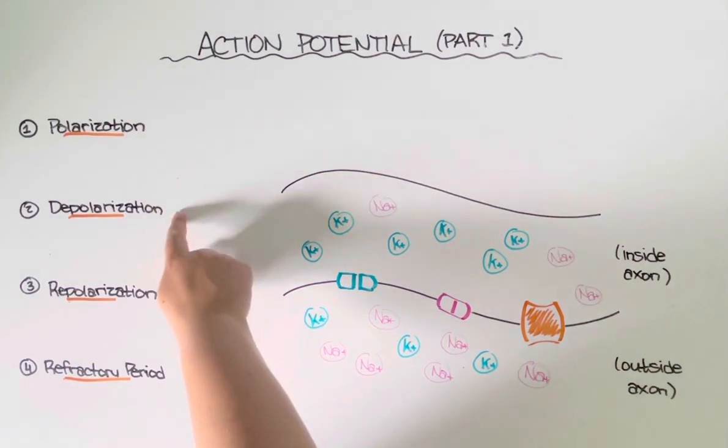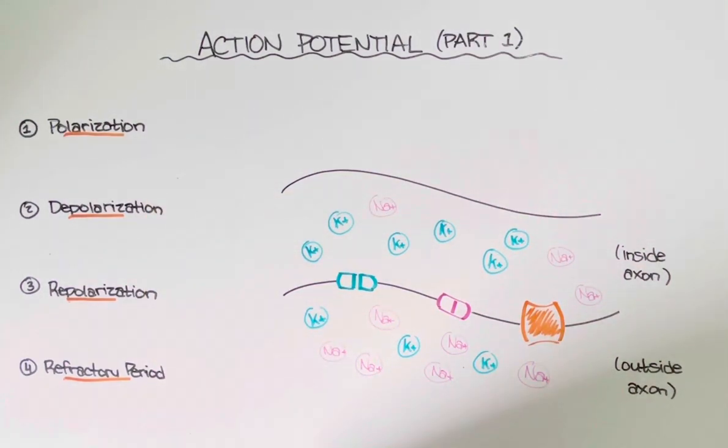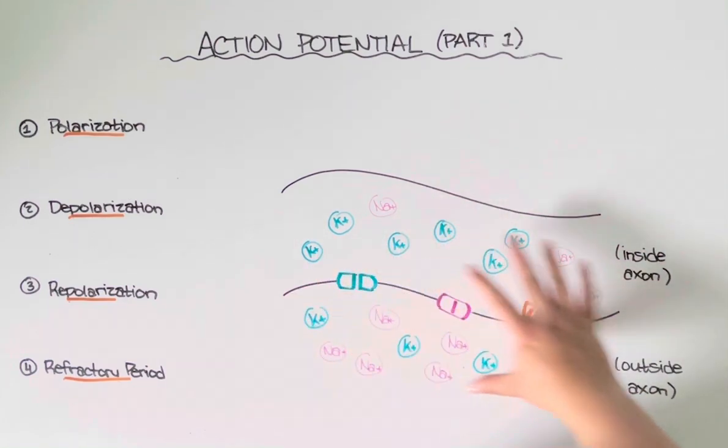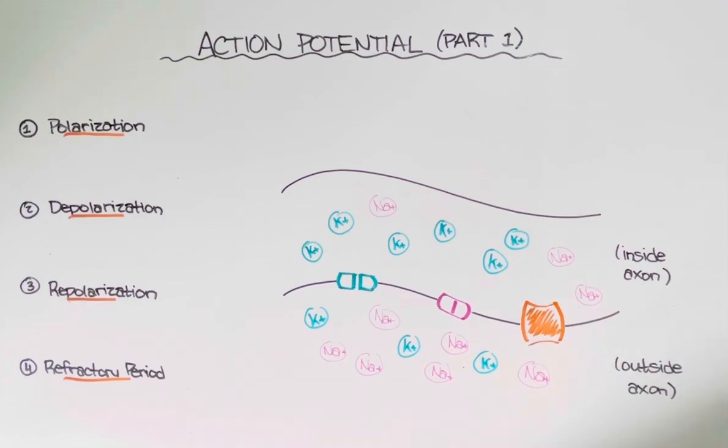Now action potential consists of four different stages, each of which involves the movement of ions in and out of the cell with the help of these membrane-bound proteins. So what we're going to do is keep track of exactly what those ions are doing at each stage, starting with polarization.